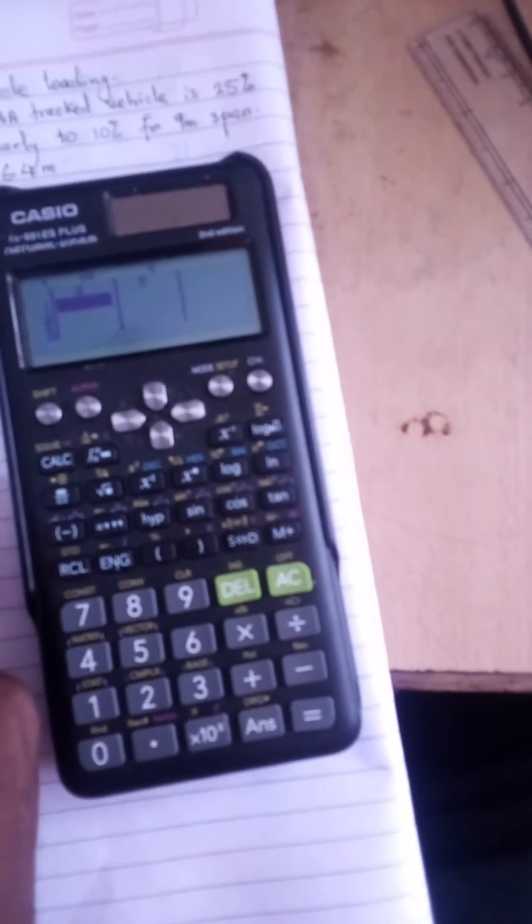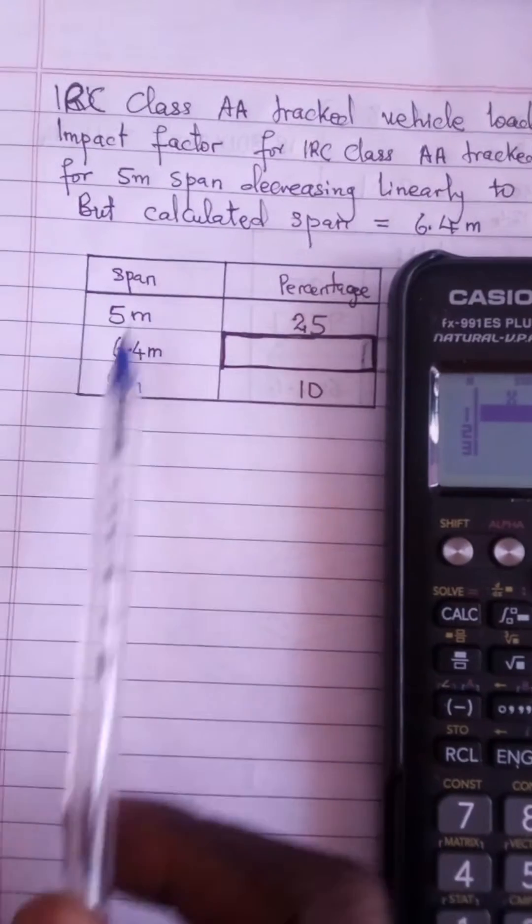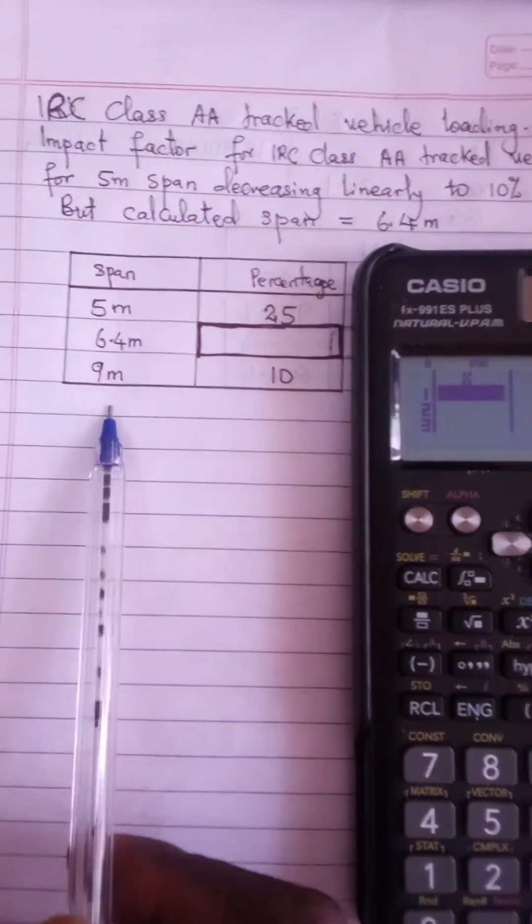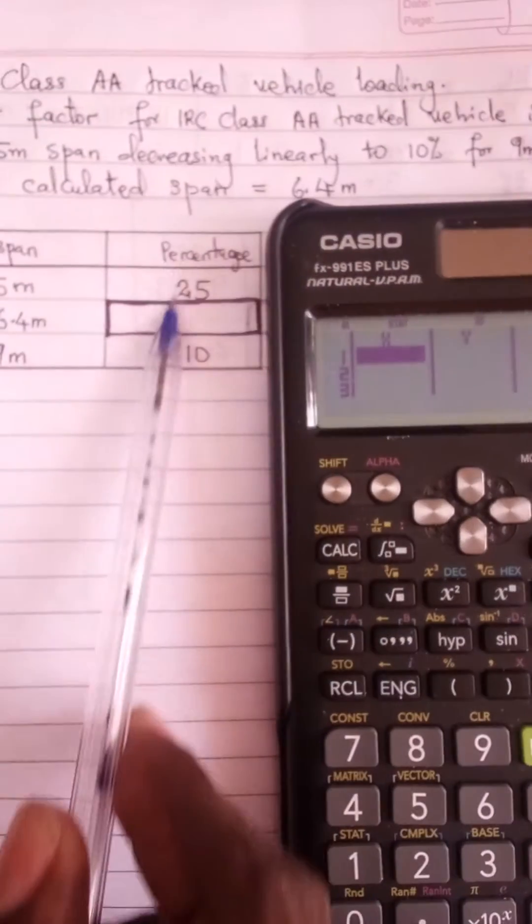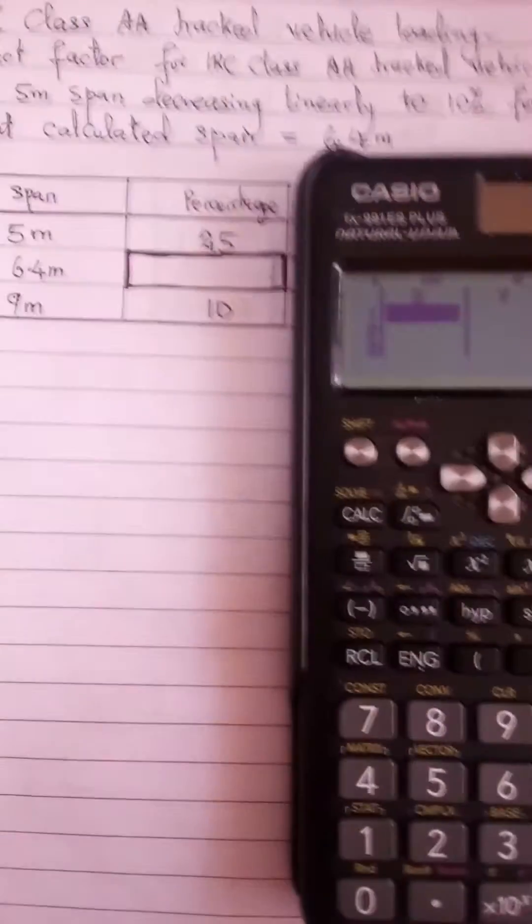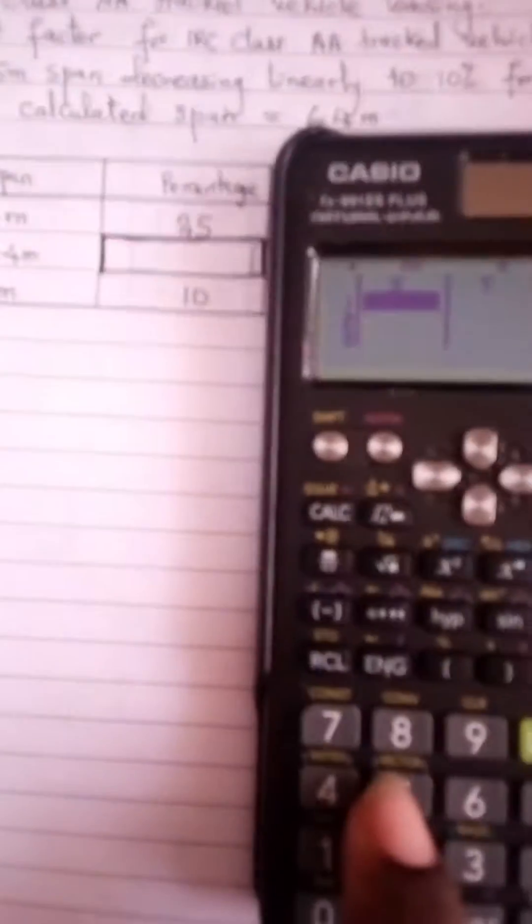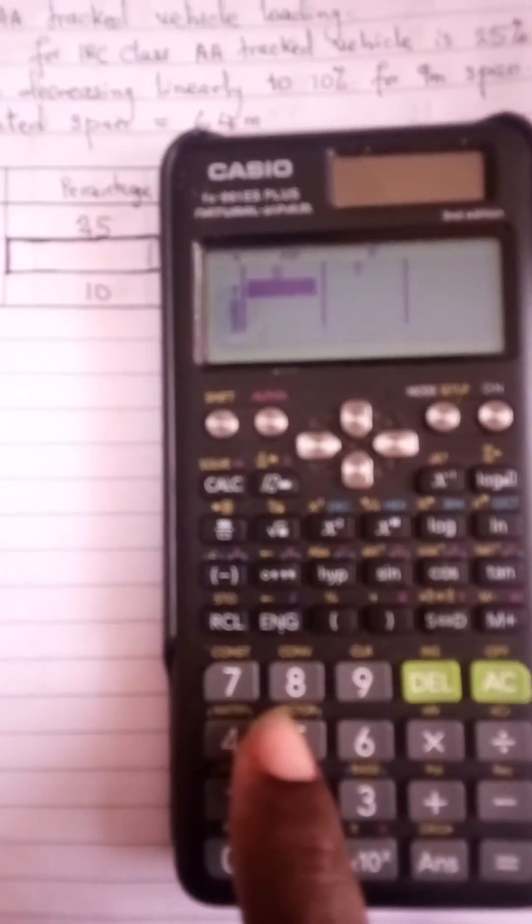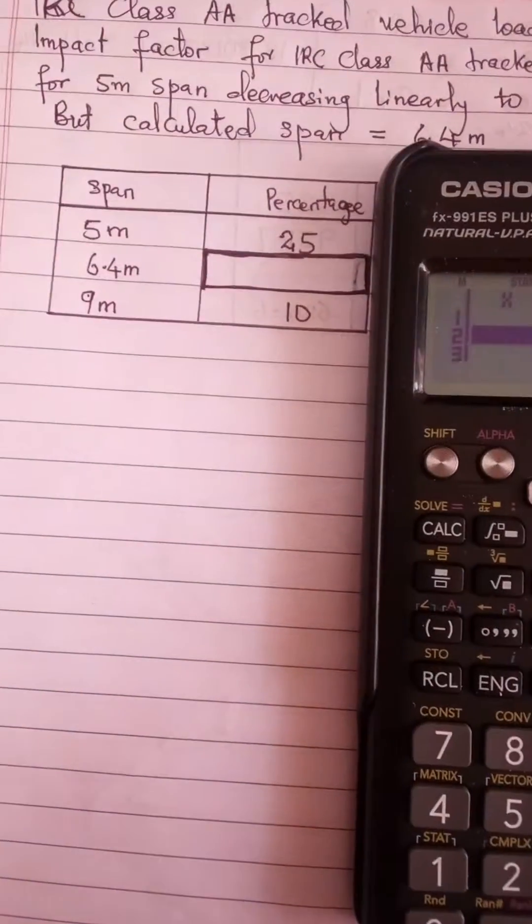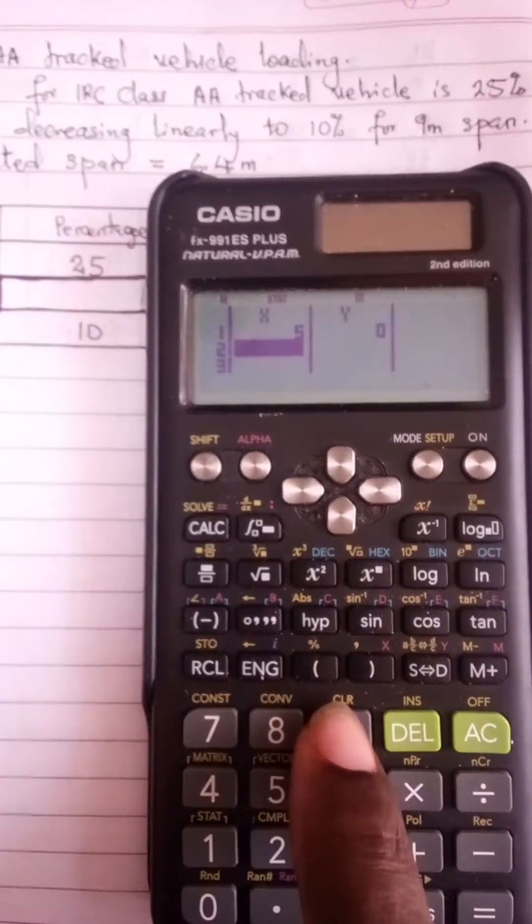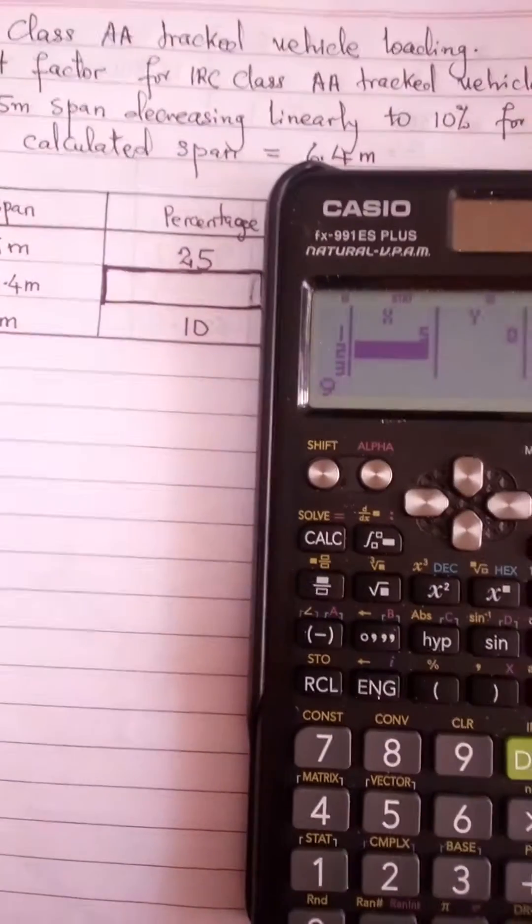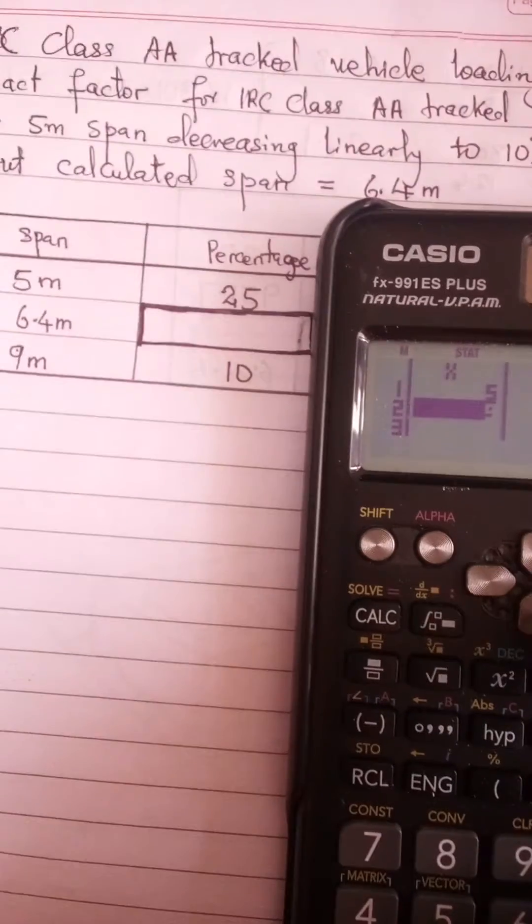Now from here I will put the values of span and percentage. I will put the values of span on the X column and the percentage on the Y column. So first, the first one is 5, so I will press 5 equal to. The next one is 9 because I don't know 6.4, so I type 9.